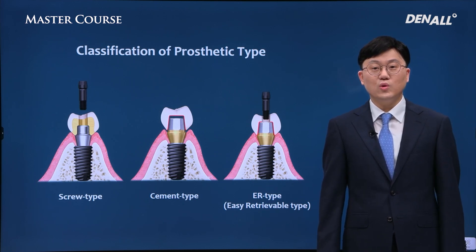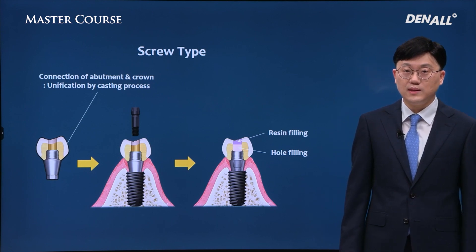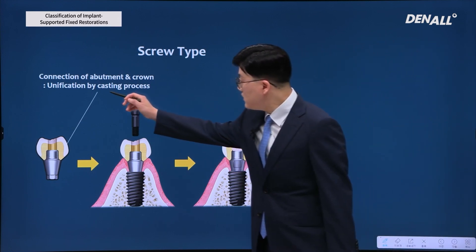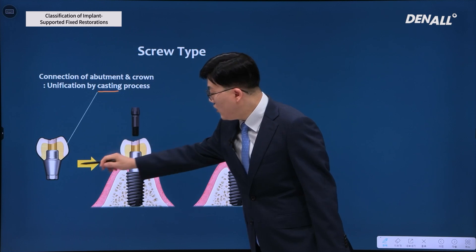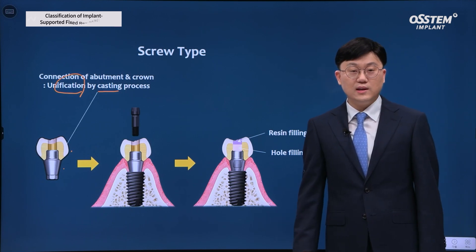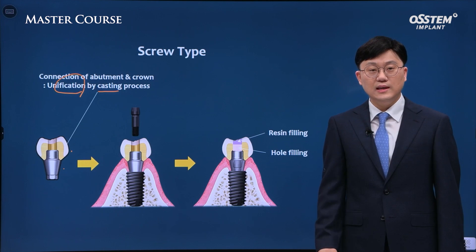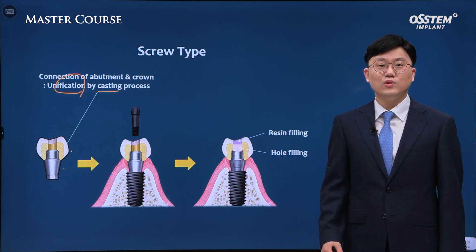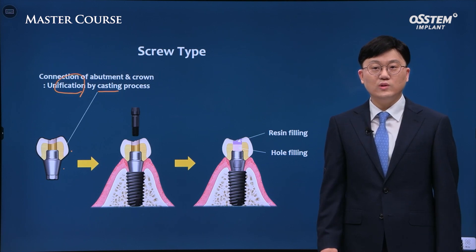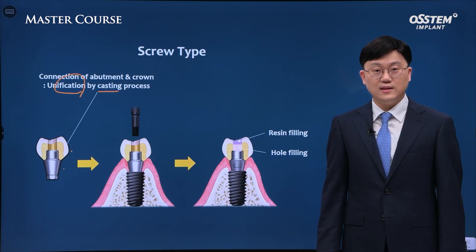Screw type is where the abutment and crown become one through casting. When we do try-in of the prosthesis and make adjustments, you need to make sure that the abutment and crown move as one. As the screw is adjusted, you do try-in and make further adjustments. After this series of processes, final delivery is done, the recommended torque is used to tighten, and the screw hole is sealed.